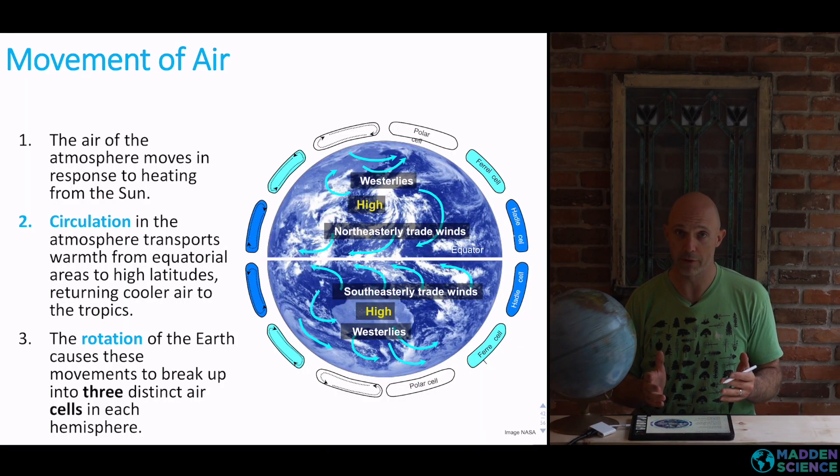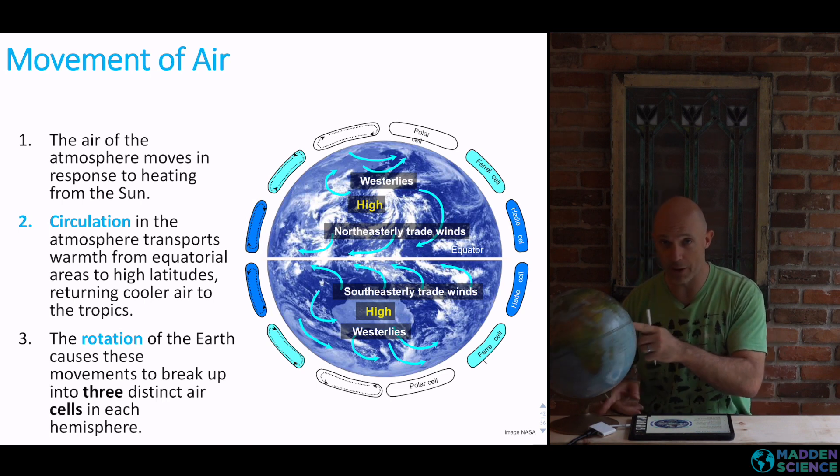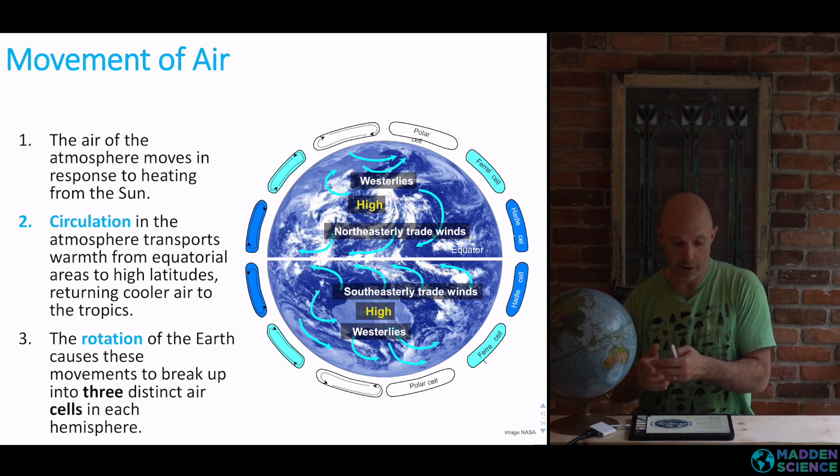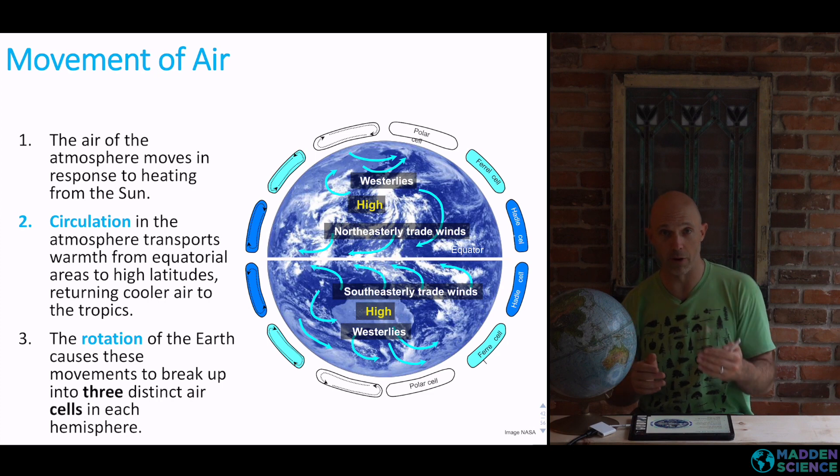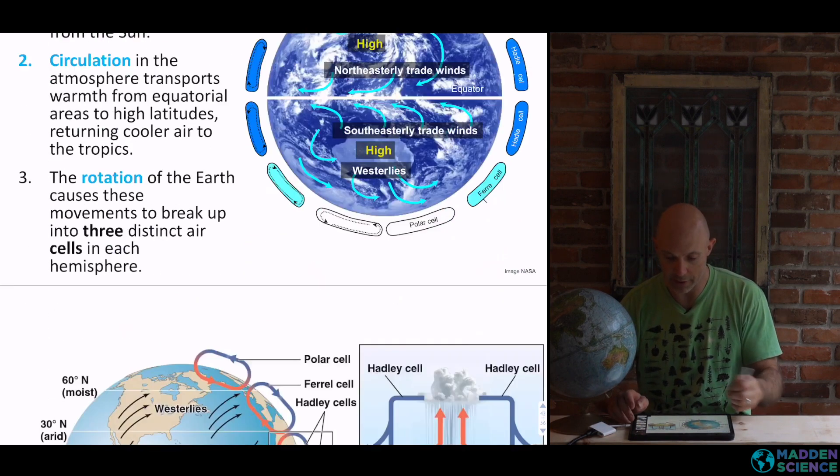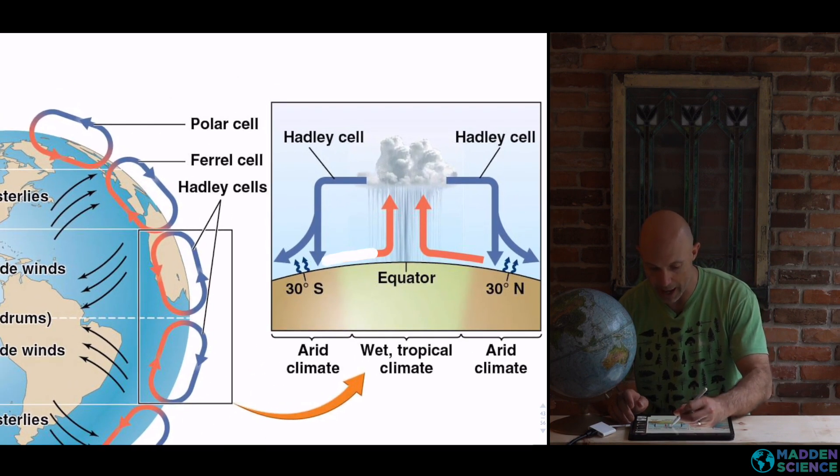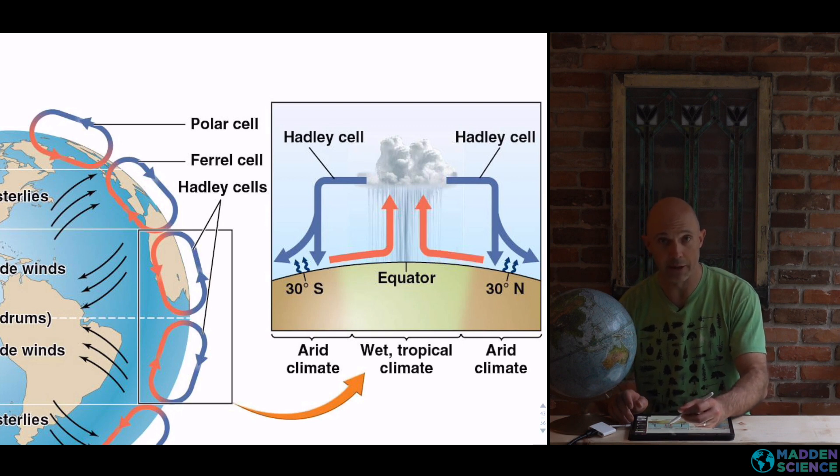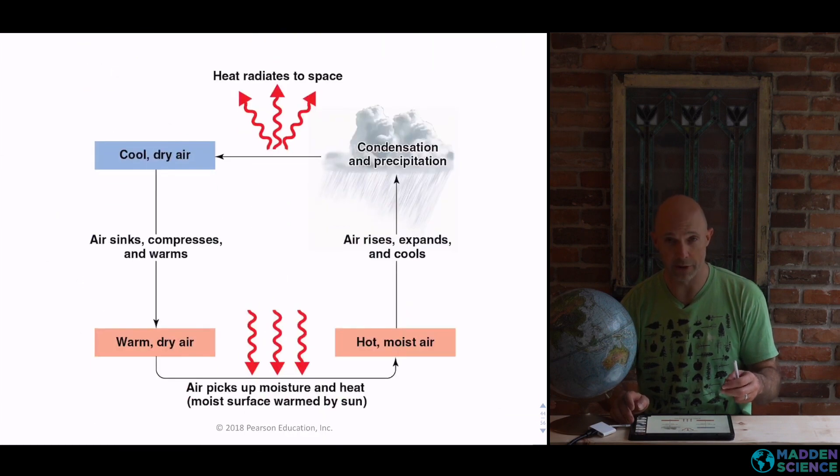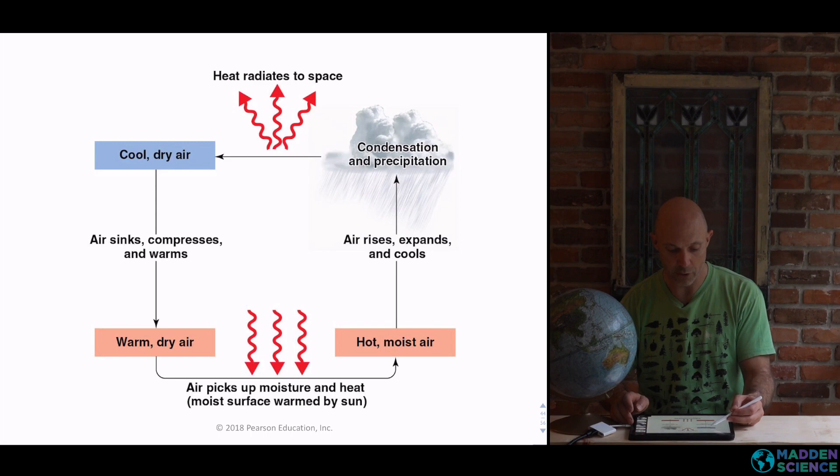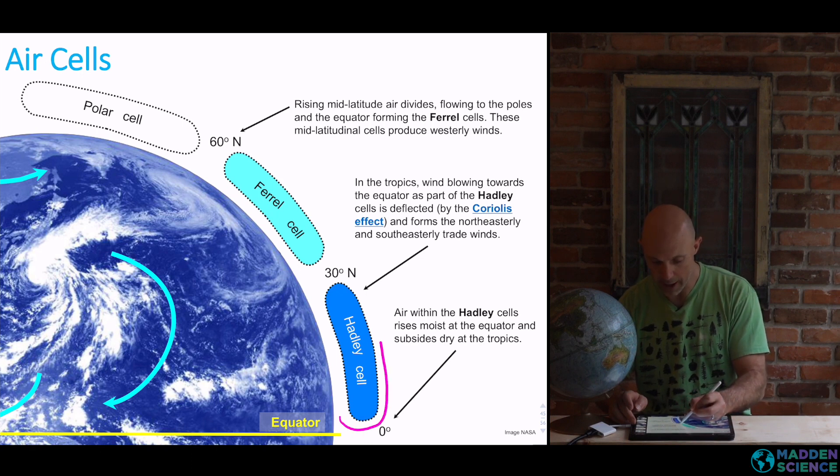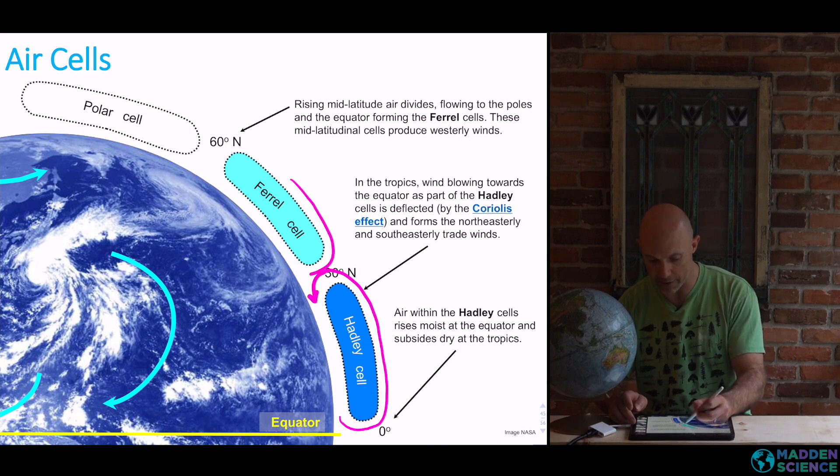So the movement of air is going to depend on a number of things, mainly the heating of the Earth from the sun, and the fact that the Earth is spinning. The air of the atmosphere moves in response to the heating from the sun. Circulation in the atmosphere transports warmth from the equator to higher latitudes, which then cools, and the rotation of the Earth can cause these movements to break up into three distinct cells. Three on the northern hemisphere, three on the southern hemisphere. This shows a little bit more clearly. You can see that the red line is the hot air moving and rising, condensing into clouds and precipitation, and then cools, and cooler dry air falls down. This pattern shown here in elevating, and then cycling back down, and we get the opposite here with the Ferrel cell, and then the polar cell. And this is flip-flopped or reciprocal on the southern hemisphere.